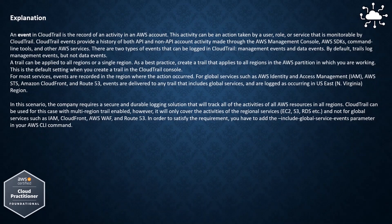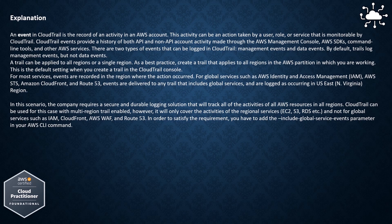An event in CloudTrail is the record of an activity in an AWS account. This activity can be an action taken by a user, role, or service that is monitorable by CloudTrail. CloudTrail events provide a history of both API and non-API account activity made through the AWS Management Console, AWS SDKs, command line tools, and other AWS services. There are two types of events that can be logged in CloudTrail: management events and data events. By default, trails log management events but not data events. A trail can be applied to all regions or a single region.